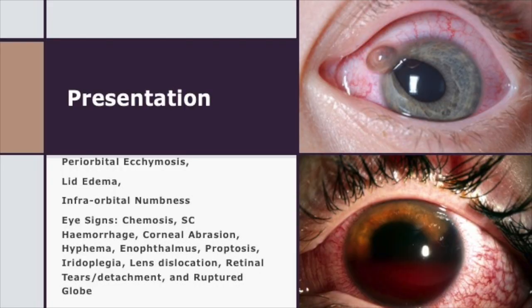When you look closely at the eye, you may see chemosis of the conjunctiva, subconjunctival hemorrhage, corneal abrasions, hyphema — which is a collection of blood in the anterior chamber — enophthalmos or a sunken eye, exophthalmos or proptosis, iridoplegia, a dislocated lens, retinal tear or detachment, and/or a ruptured globe.